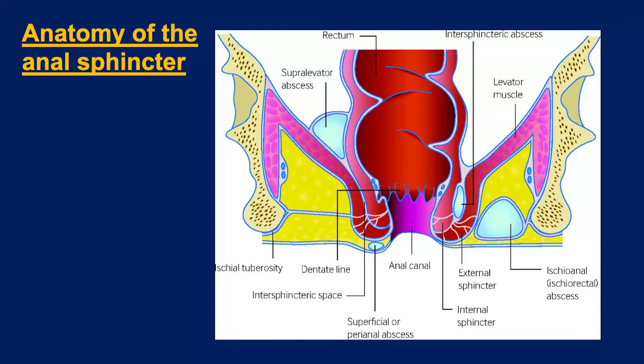In order to define the fistulas fully it's important to describe the normal anatomy of the perineum. There are two sphincter complexes involved in faecal continence: the internal sphincter, which is under involuntary control and is a circular lining of the anal canal, and the external sphincter, which is associated with the levator plate and is under voluntary control. A simple fistula is an abnormal communication between the two surfaces that doesn't go through the sphincter complex at all, whereas a complex one involves the sphincters as part of its path.